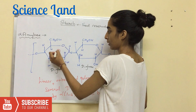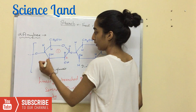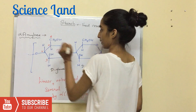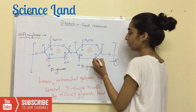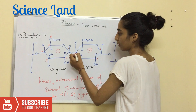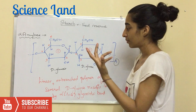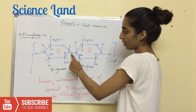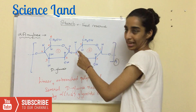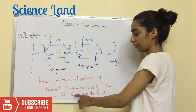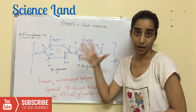In the first glucose, we have the first, second, third, fourth, fifth, and sixth carbons. Similarly, in the second glucose molecule we have first through sixth carbons. The link is formed between carbon 1 of the first glucose residue and carbon 4 of the second — so it is an alpha 1-4 glycosidic bond. That is the structure of alpha amylose.